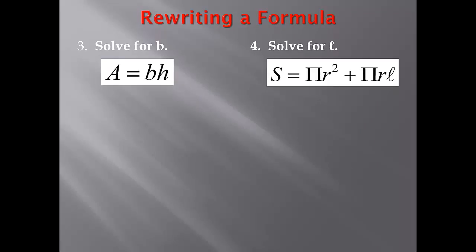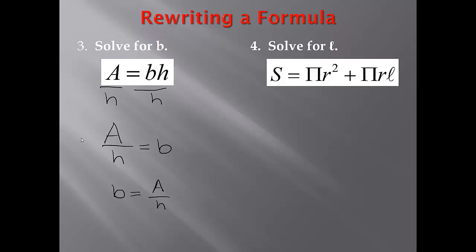Now we are going to rewrite a formula. For number 3, we are going to solve for b — we want it to say b equals. We have a equals bh. Since we have b times h, we would divide to solve. Since we want b by itself, we divide both sides by h. So we have a over h equals b, because h divided by h is 1, leaving us with just b. We could also write this as b equals a over h. Both of these answers would be correct.